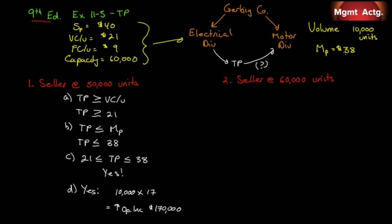For every dollar cheaper than $38, some of the $170,000 is redistributed between divisions. At $38, the full $170,000 shows in the electrical division. Moving from $38 down to $37, $36, all the way to $21, we transfer $10,000 per dollar to the motor division. At $37: motor division gains $10,000, electrical shows $160,000 — overall the organization still benefits by an extra $170,000.